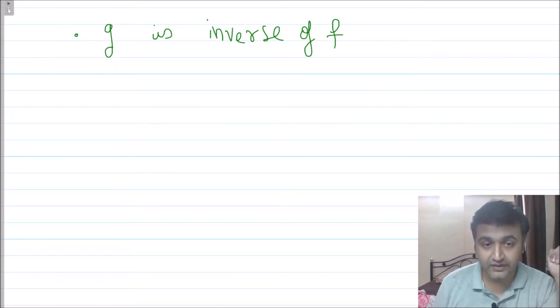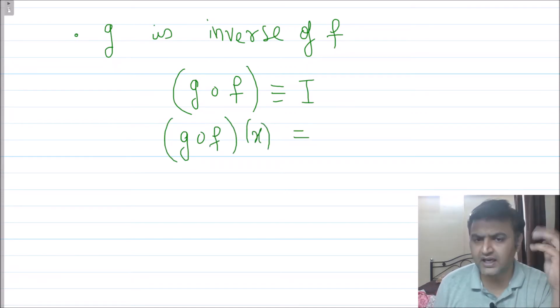When do I say g is the inverse of f? If I take the composition of g and f, I get the identity function. That means g compose f of x is nothing but i of x, where i is the identity function. This is what you mean by inverse of a function.